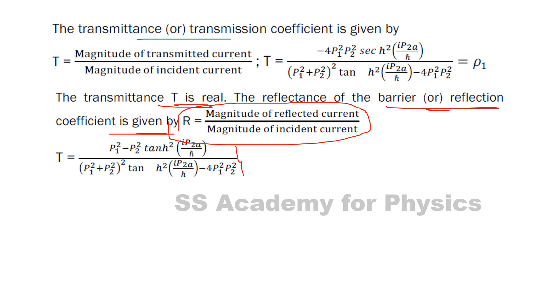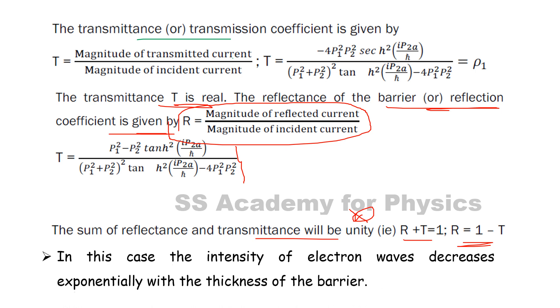The sum of reflectance and transmittance will be unity. This is very important: R plus T equals one, so R equals one minus T. In this case, the intensity of electron waves decreases.